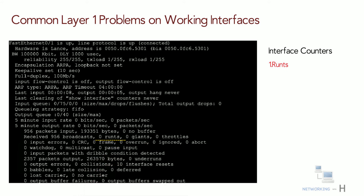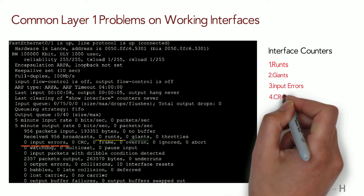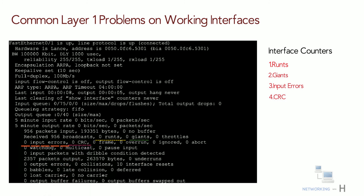Looking at common counters and errors: Runts are frames that did not meet the minimum frame size requirement of 64 bytes, and can be caused by collisions. Giants are frames that exceed the maximum frame size requirement of 1518 bytes. Input errors is a total of many counters including runts, giants, no buffer, CRC, frames, overrun, and ignore counts. The CRC counter increases when a received frame does not pass the FCS check; this can be caused by collisions.